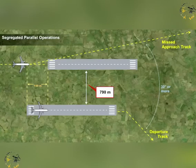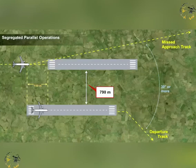ILS or MLS precision radar or visual approaches may be conducted in segregated parallel operations, provided suitable surveillance radar and ground facilities exist for the specific type of approach.